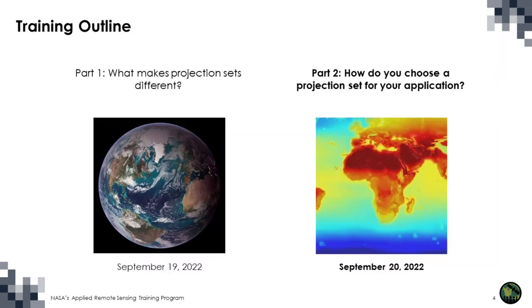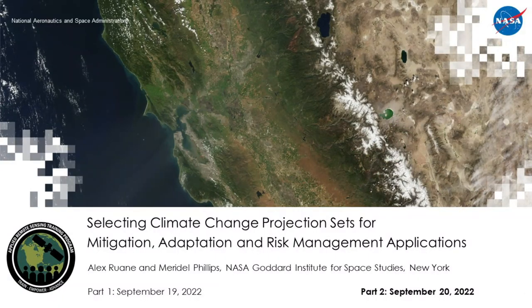In part one yesterday, we discussed key distinguishing features of climate projection sets, where they come from, and the context of application areas such as mitigation, adaptation, and risk. Today in part two, we'll be discussing the different considerations in choosing a projection set for a given application. I'll hand this off to Dr. Alex Ruane, co-director of the Climate Impacts Group at the NASA Goddard Institute for Space Studies in New York City.